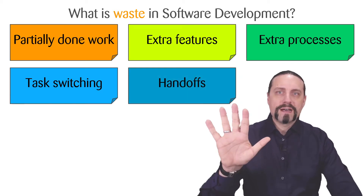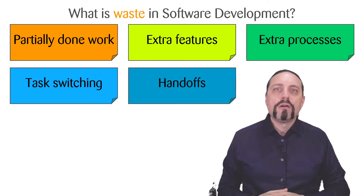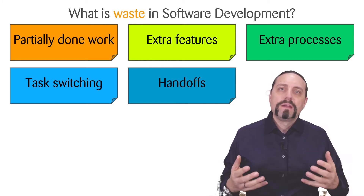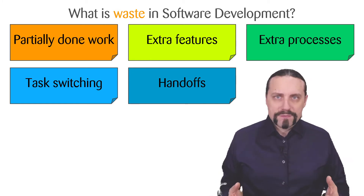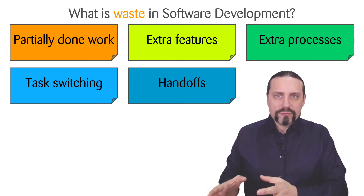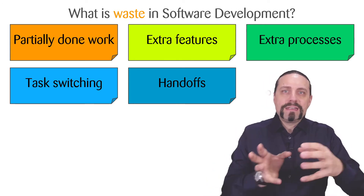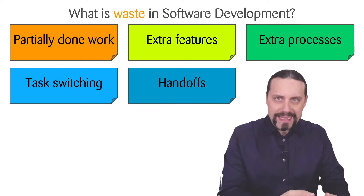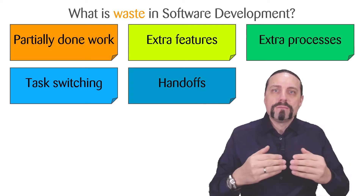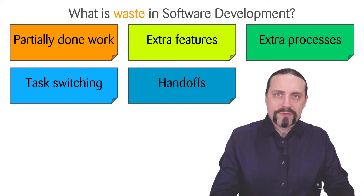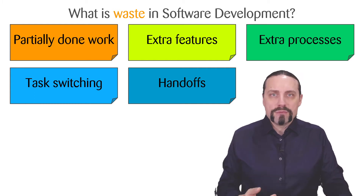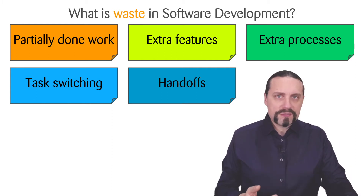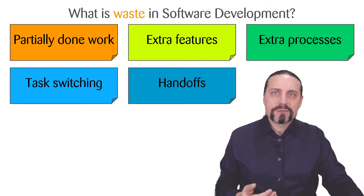The fifth type of waste is handoffs — when we are doing something and need to pass the information to someone else. During that transfer, there is usually some loss of information, which is something we should minimize or automate.